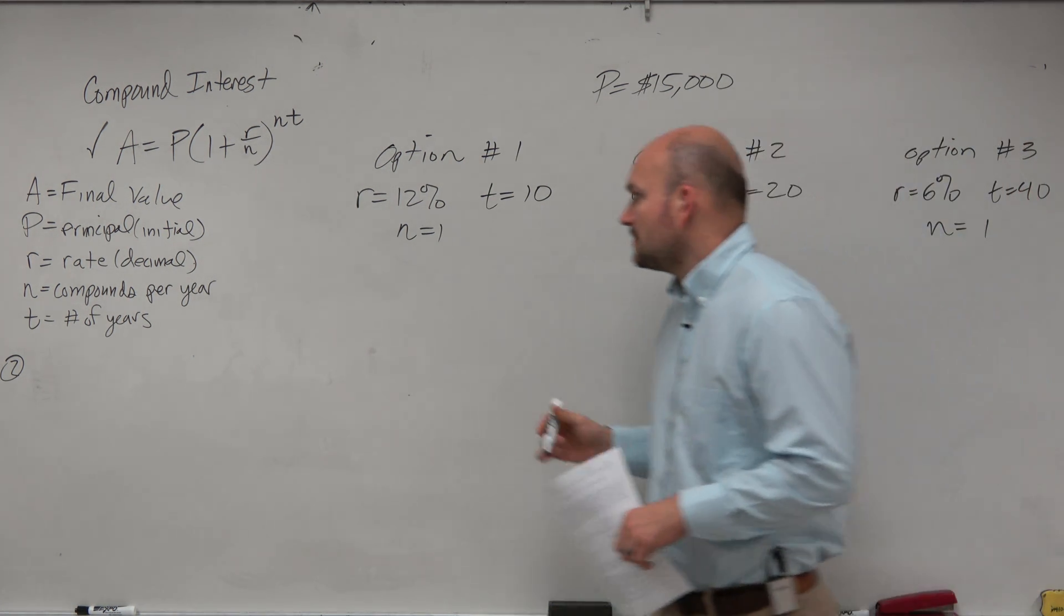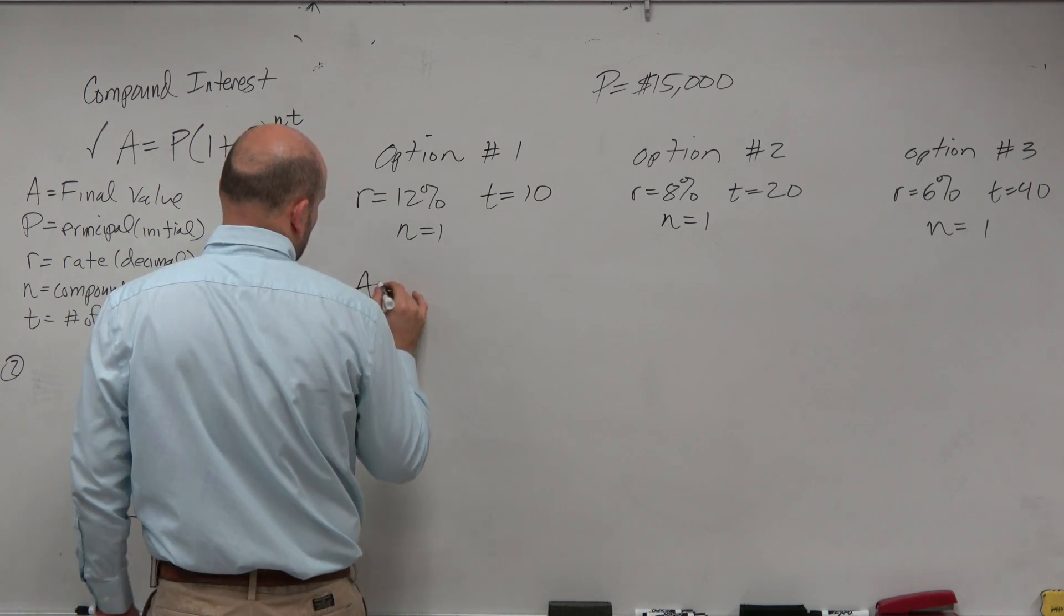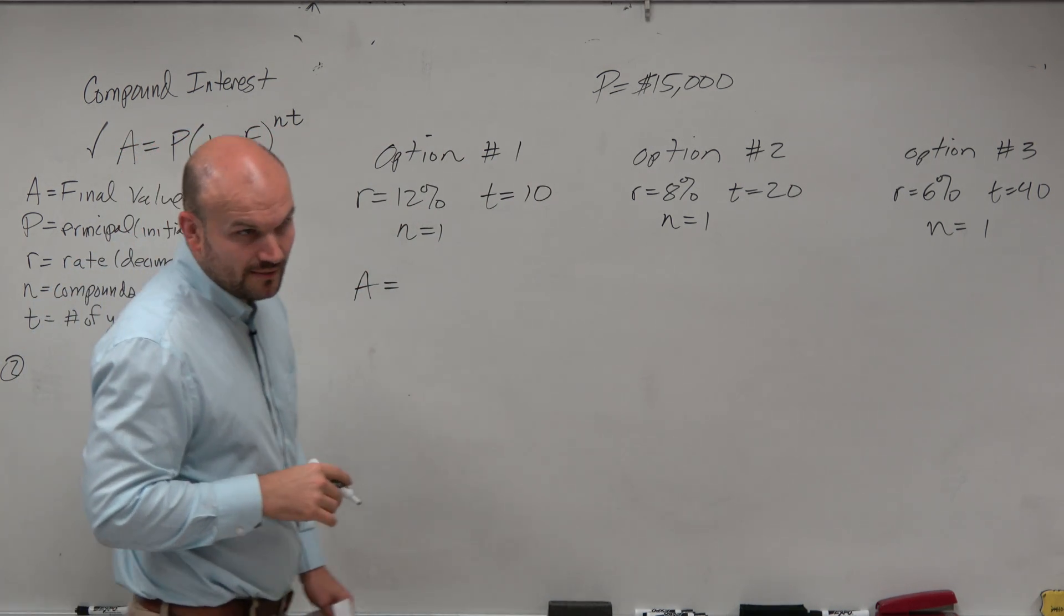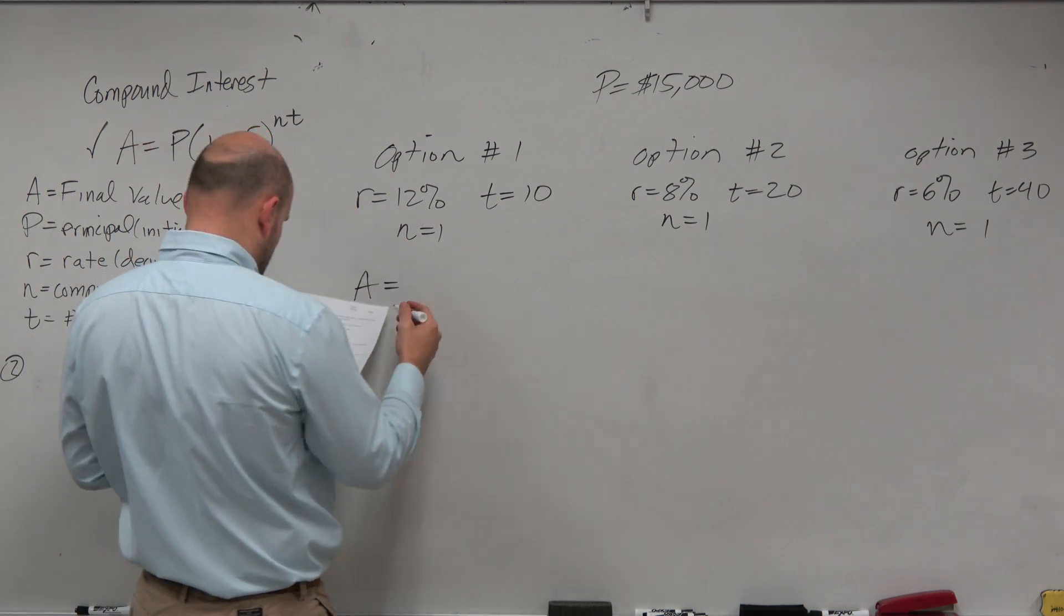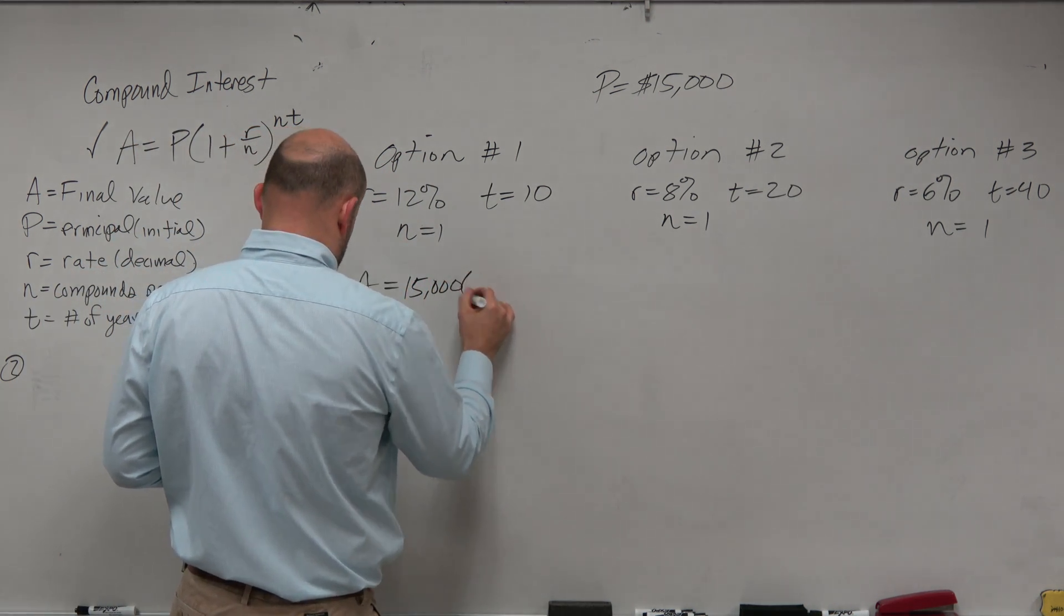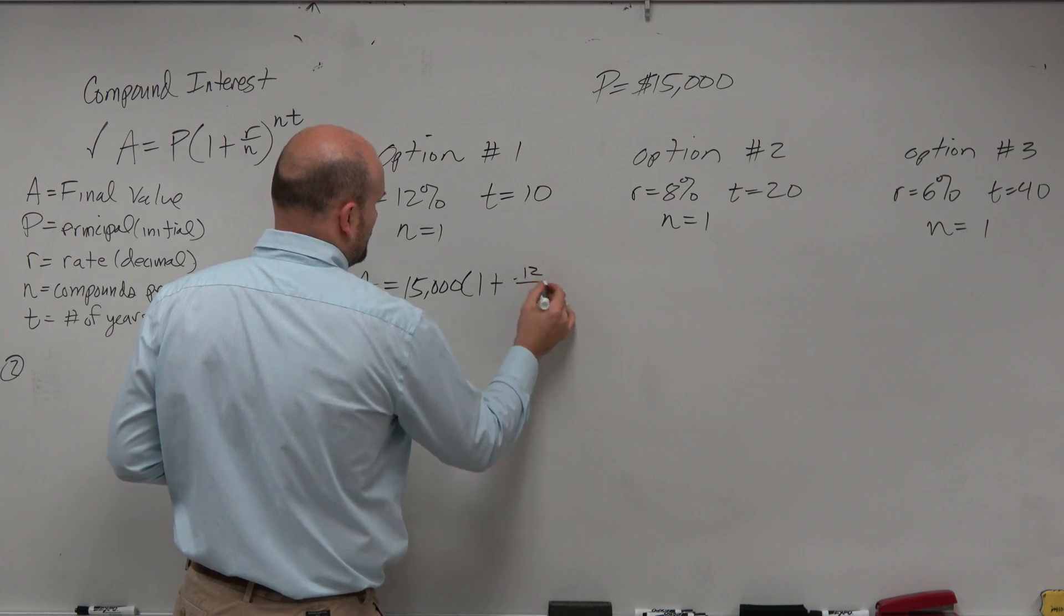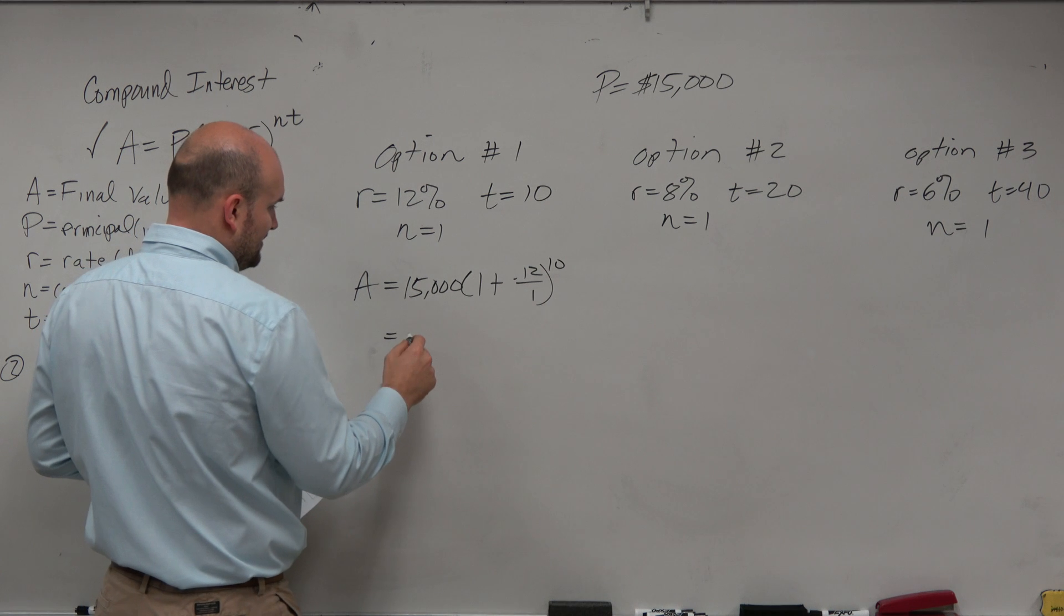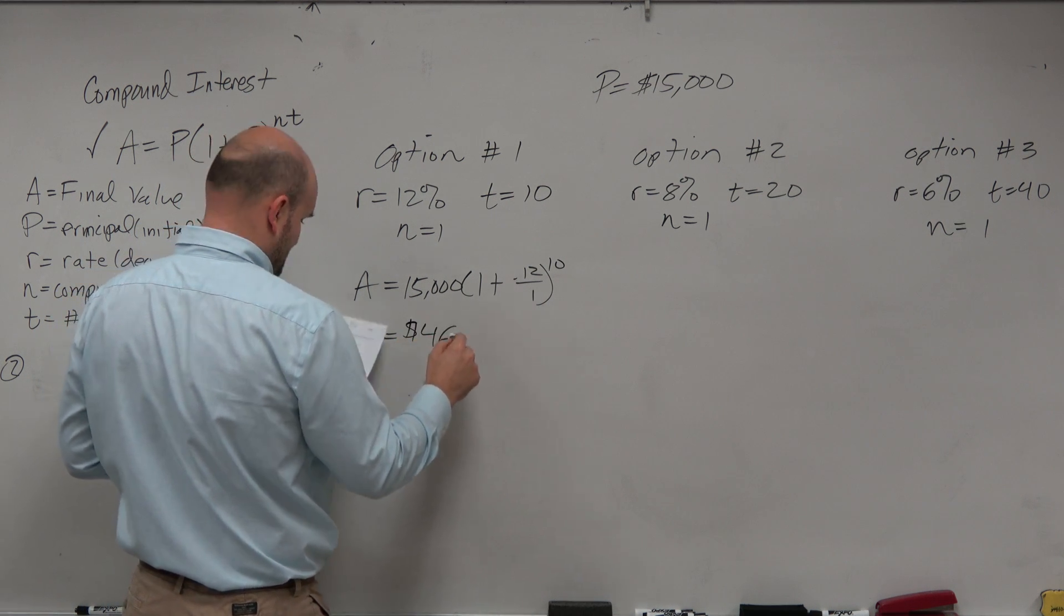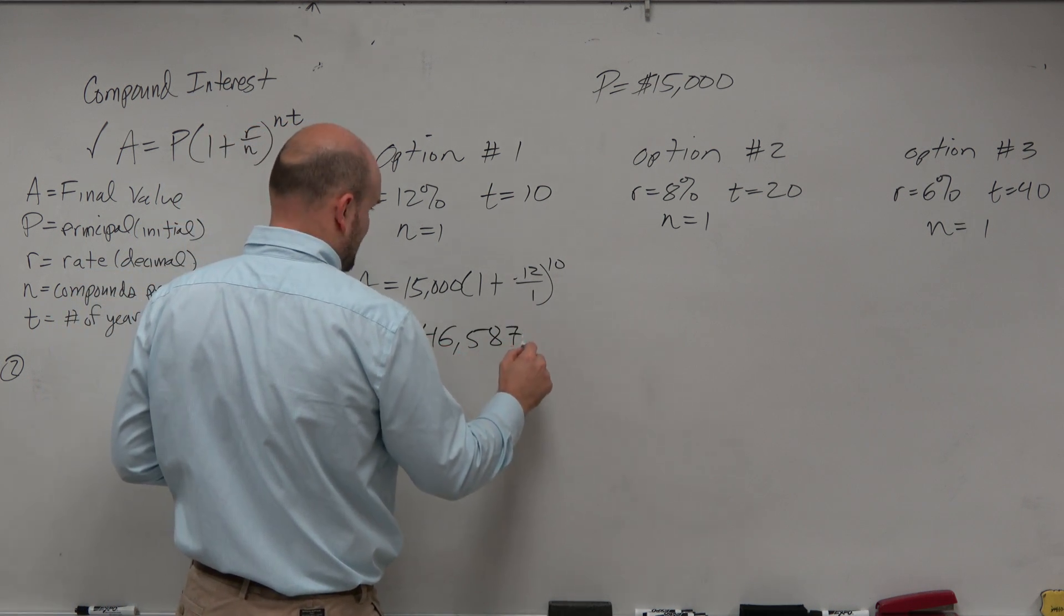So let's go and look at this. A is going to represent our final amount. And when you guys go ahead and plug this in for that one, you're just going to have $15,000 times 1 plus 0.12 over 1, raised to the 10th power. And this one, you're going to get $46,587.72.